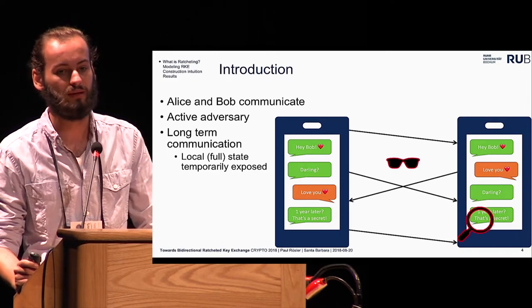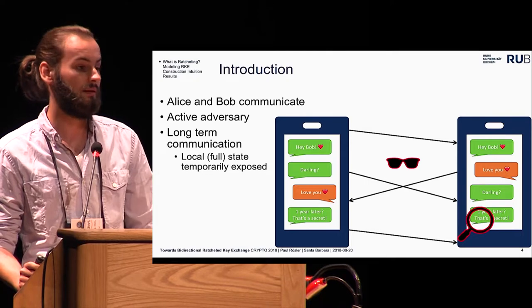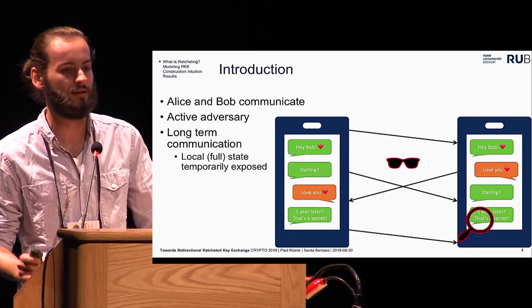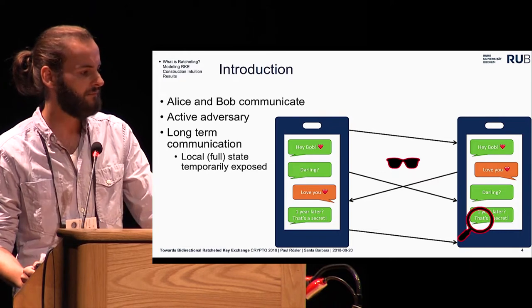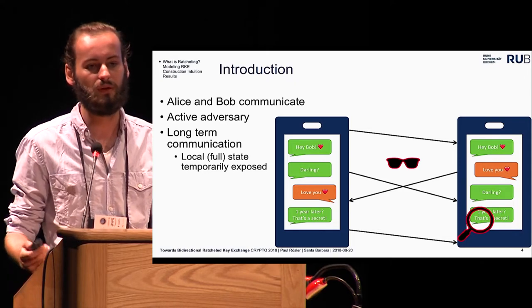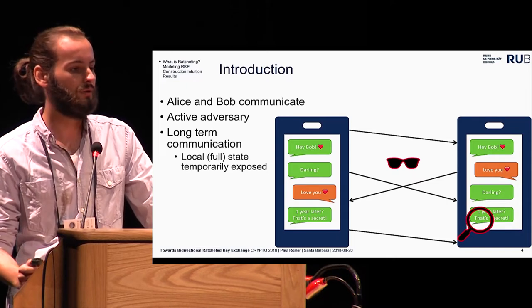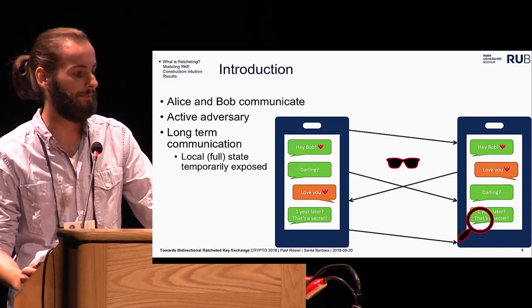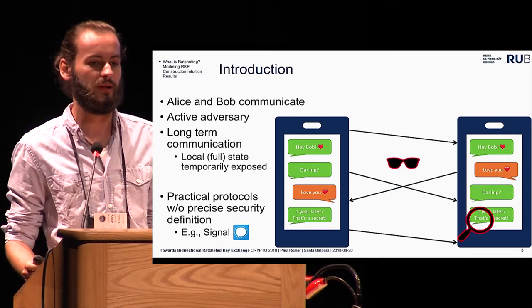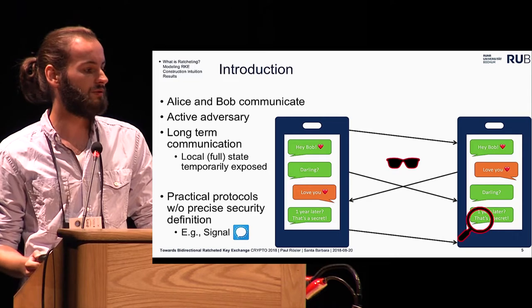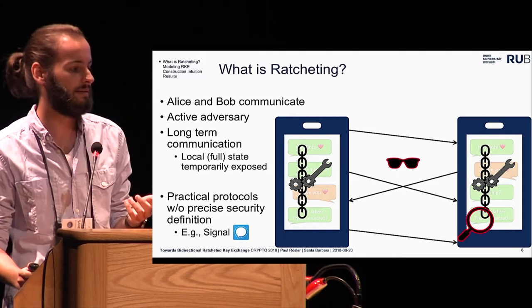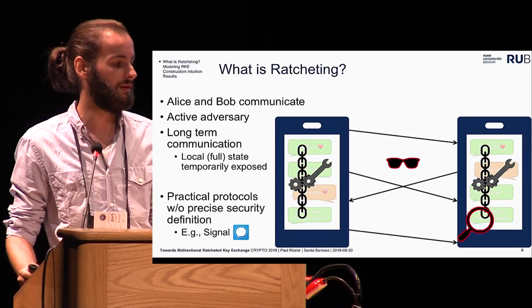One practical example would be that Alice or Bob check in at the airport and the police requires them to hand over the smartphone, and they make a copy of these secrets and thereby obtain information on these local states. But in such a setting we still want guarantees that previous communication before such an exposure of the local state stays secure, and even further we want that future communication maybe recovers into a secure state again. There are actually practical protocols that aim to provide security in such a setting, and the most famous example is the Signal protocol, which also made the term ratcheting mostly famous.